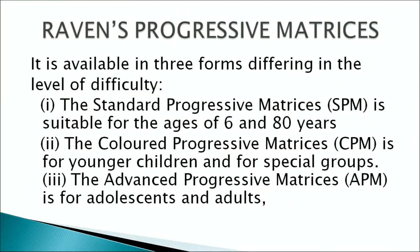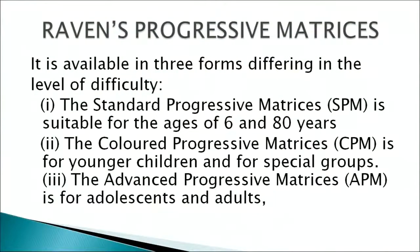Another intelligence test is known as Raven's Progressive Matrices. Raven's Progressive Matrices is available in 3 forms that differ in the level of difficulty. First is the Standard Progressive Matrices, also known as SPM, suitable for ages 6 to 80 years. The second is the Colored Progressive Matrices, also known as CPM, used for younger children and special groups. The third is the Advanced Progressive Matrices, also known as APM, used with adults and adolescents.